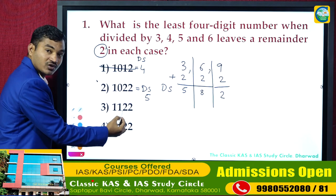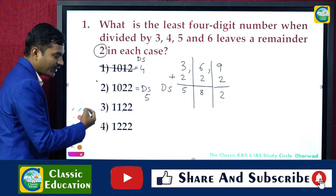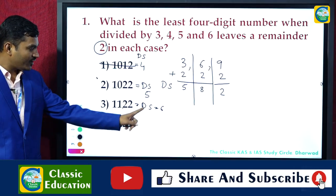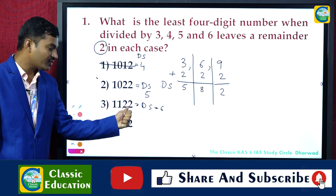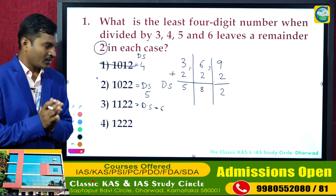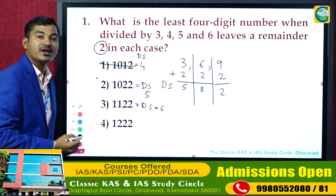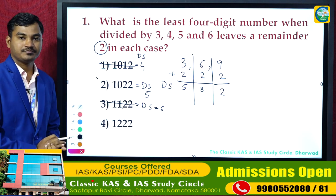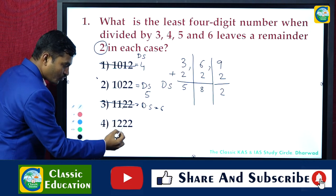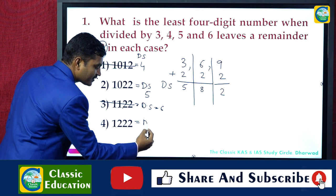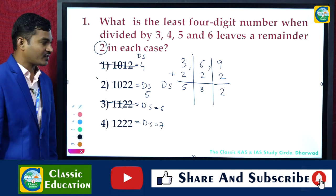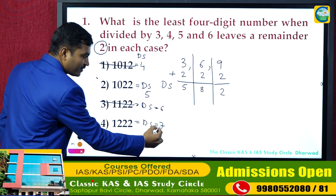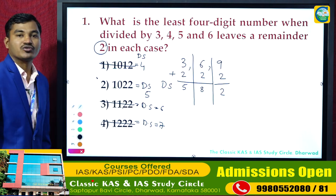Let us check the next option: 2+2 = 4, 4+1 = 5, plus 6 — digit sum is 6. If digit sum is 3, 6, or 9, the number is completely divisible by 3. I do not need that; I need remainder 2, so this cannot be my answer. The last option: 2+2+2 = 6, plus 1 = 7 — digit sum is 7. I need 5, 8, or 2, so this also cannot be my answer.